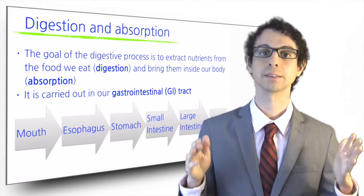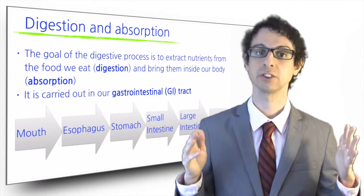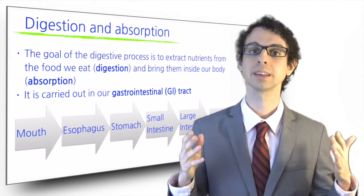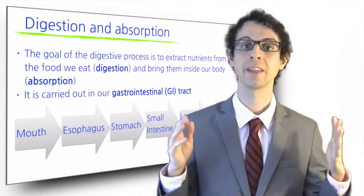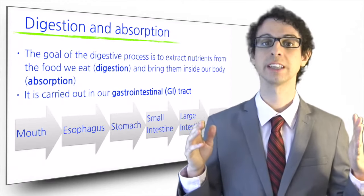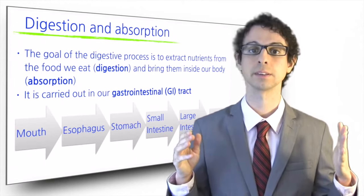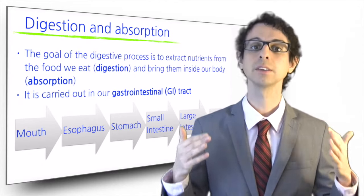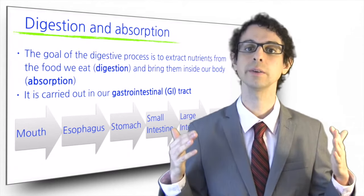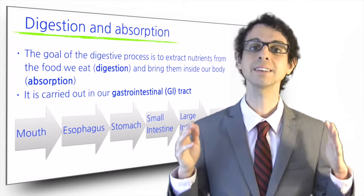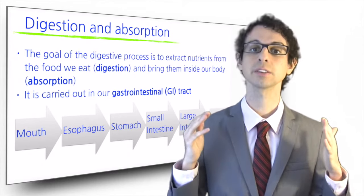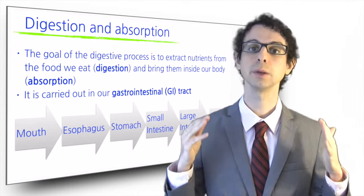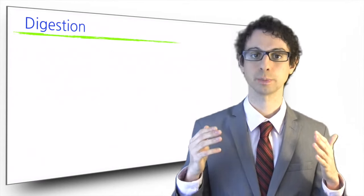Our GI tract has many other functions on top of digesting and absorbing food. For example, it prevents pathogens or other potentially dangerous substances from entering our bloodstream. It houses a huge population of bacteria that are necessary for our survival, and it plays very important roles in immunity and hormone production.